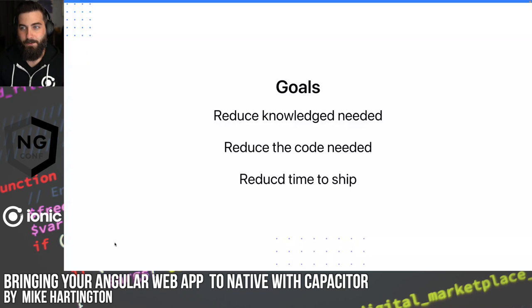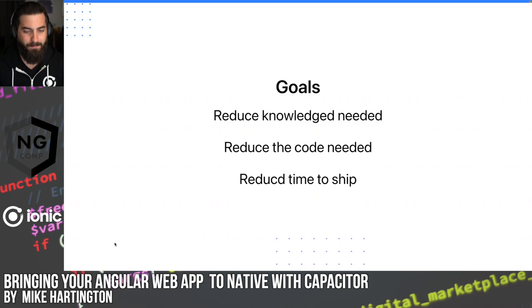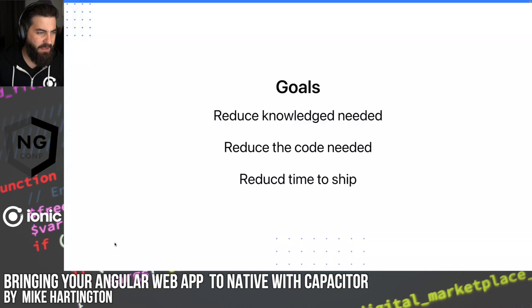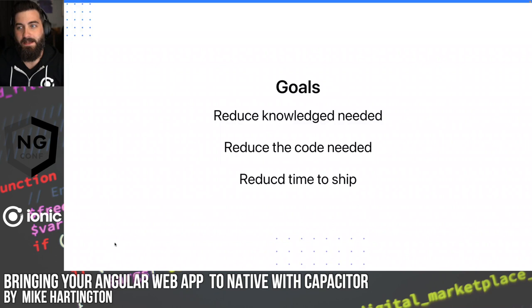The goals of cross-platform are fairly simple: reduce the amount of knowledge you need to build something and deploy it to various platforms, reduce the amount of code you need to write and maintain — especially important as code complexity tends to increase — and figure out the best way to reduce the amount of time needed to deploy an app. Cross-platform tends to meet these goals really well.